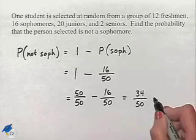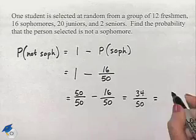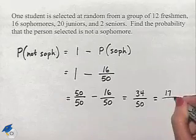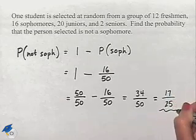And next, simplify by dividing both numerator and denominator by 2 to give us 17/25ths as our solution.